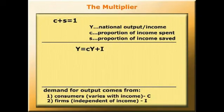Now what we need, for reasons we'll see shortly, is for Y and I terms to be on one side and the C term on the other side. So if we subtract cY from each side, we've got Y minus cY equals I.